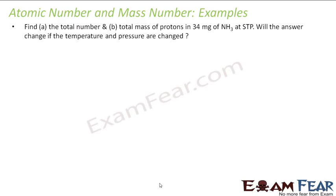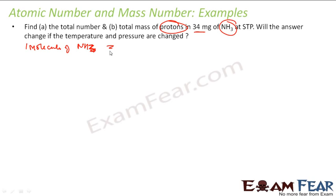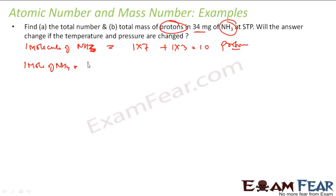Next example: find the total number and total mass of protons for 34 milligrams of ammonia at standard temperature — and we'll also check whether the value changes with temperature and pressure. One molecule of ammonia (NH₃): nitrogen has 7 protons plus 3 hydrogens each with 1 proton = 10 protons per molecule. One mole of ammonia = 17 grams = 6.023×10²³ molecules of ammonia.